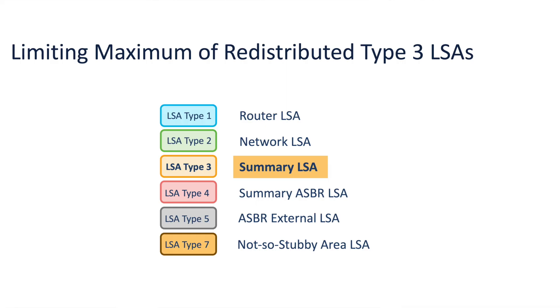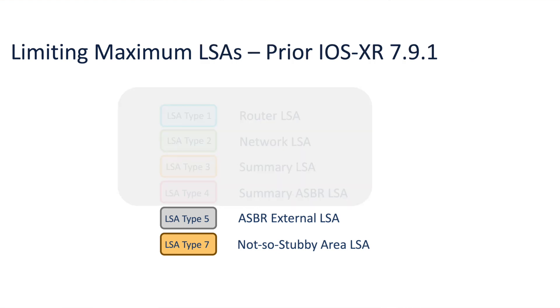Let us start with the enhancements around the routing protocol OSPF. The first feature we will discuss is around redistribution of type 3 LSAs. Prior to release 7.9.1, the maximum redistributed prefixes limit was applied only to those prefixes that are redistributed as type 5 and type 7 LSAs.